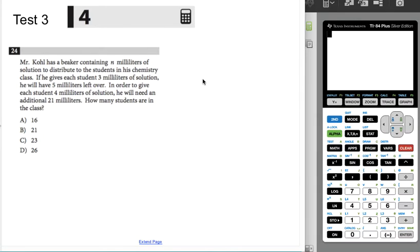This is deceptive because we have this n that we don't know anything about, but that's not the question we're asked. We're asked how many students are in the class. So I'm going to call x the number of students.